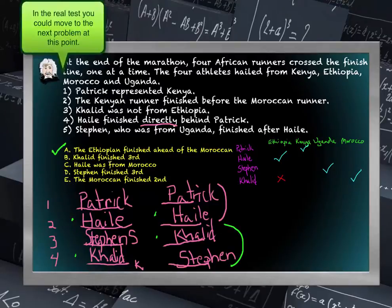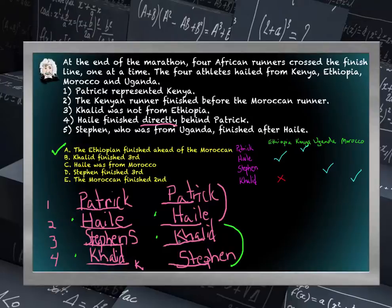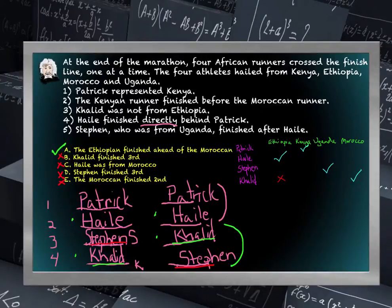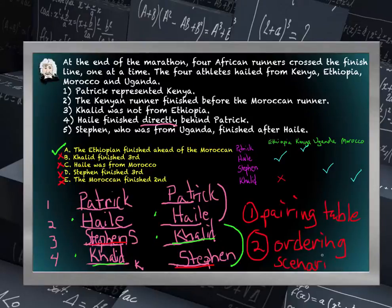Let's review the other answers to confirm. Khalid finished third — true in one scenario but not another, so not necessarily true. Hele was from Morocco — Hele is from Ethiopia, so that's clearly false. Stephen finished third — true in one scenario but not the other, so not necessarily true. The Moroccan finished second — we know Hele finished second and Hele is from Ethiopia, so that's absolutely false. The correct answer is A: the Ethiopian finished ahead of the Moroccan. Remember, for ordering and pairing problems, step one is to make a pairing table, and step two is to list out all your ordering possibilities and scenarios.